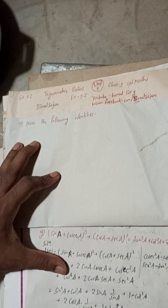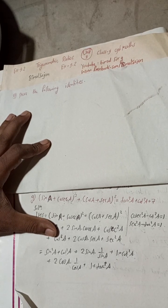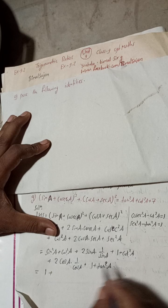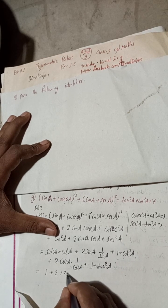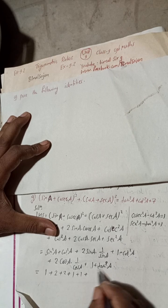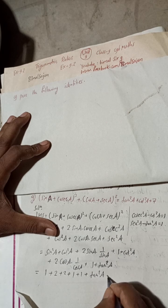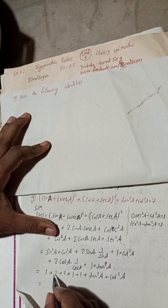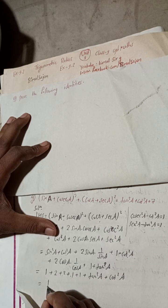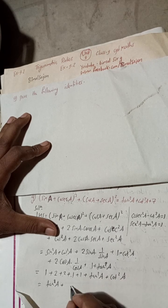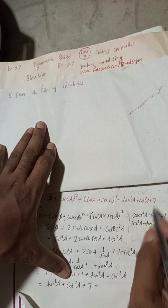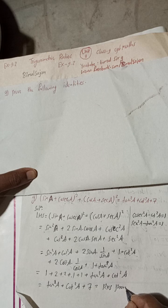Now collecting all terms: sin² A + cos² A gives 1, plus 2, plus 2, plus 1 from cosec² A expansion, plus 1 from sec² A expansion — that's 1+2+2+1+1 = 7. So we have tan² A plus cot² A plus 7, which equals the RHS. Proved.